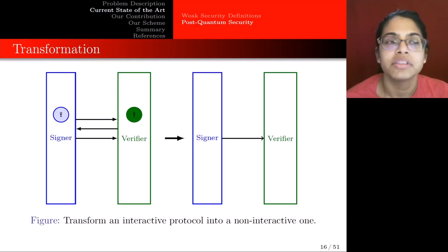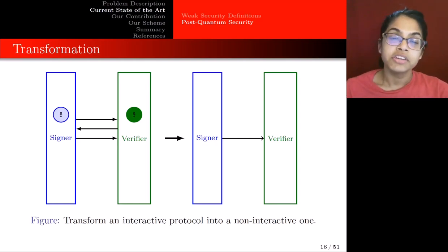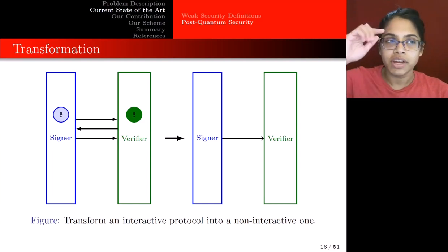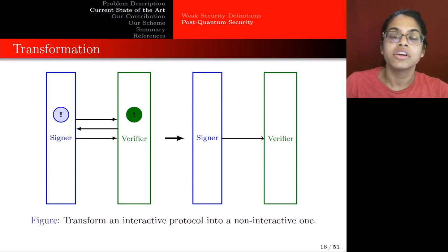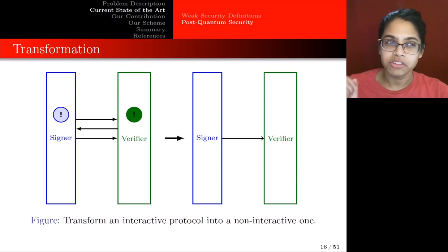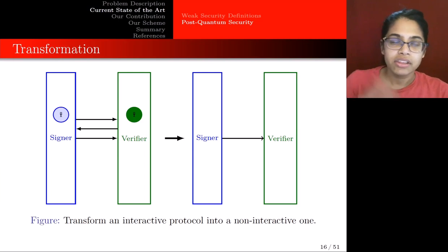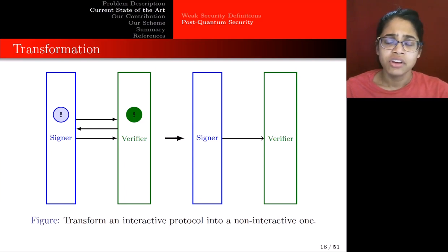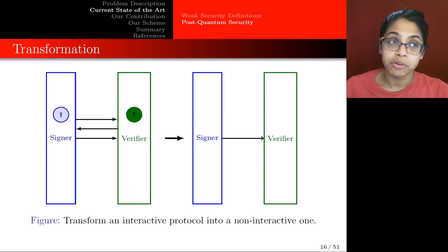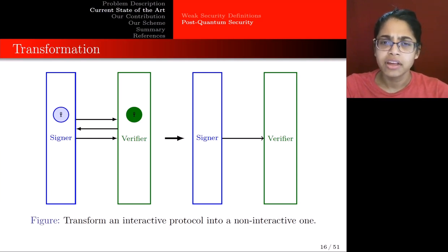To give an overview of the Fiat-Shamir transformation: it transforms an interactive protocol into a non-interactive one. The interactive protocol is a sigma protocol where first the signer sends a commitment, the verifier sends back a challenge, and the signer sends an answer. Instead of these three steps, we squash it down into a single step. Rather than getting the challenge from the verifier, there's now a random oracle. The signer queries the random oracle for his challenge and then sends all the messages in a single shot to the verifier. The verifier can verify that this response really came from the random oracle because he also has access to it.